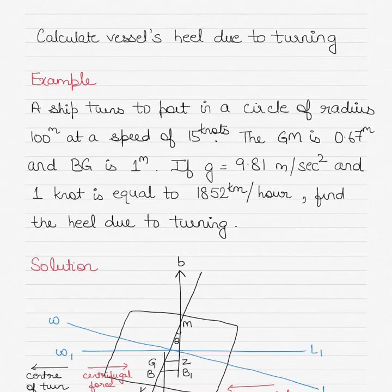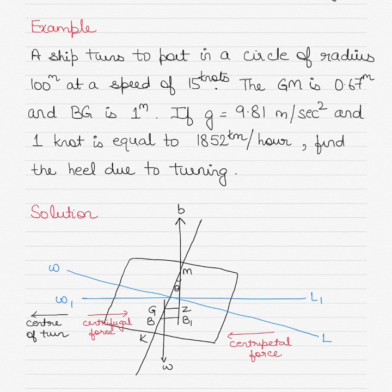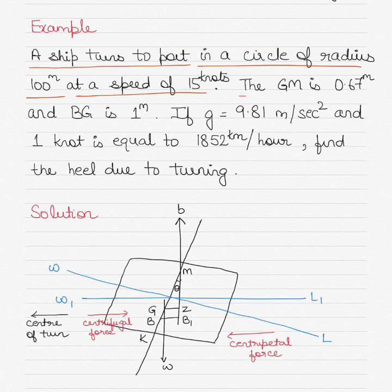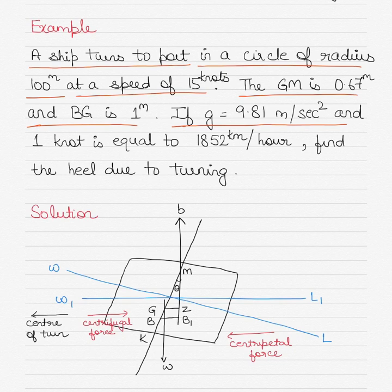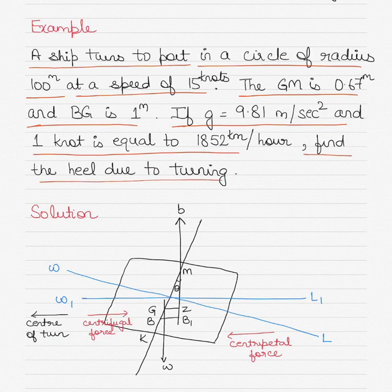In this video I'll show you how to calculate the vessel's heel due to turning. We'll take up an example but I'll also explain the whole thing in theory as well. The question is: a ship turns to port in a circle of radius 100 meters at a speed of 15 knots. The GM of the vessel is 0.67 meters and BG is 1 meter. G is equal to 9.81 meters per second squared, and one knot is equal to 1852 meters per hour. Find the heel due to turning.